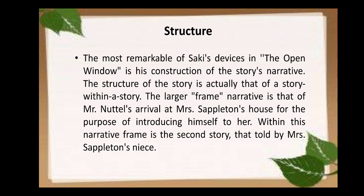When we talk of the structure of the story, the most remarkable of Saki's devices in The Open Window is his construction of the story's narrative. The structure is actually that of a story within a story. The larger frame narrative is that of Mr. Nuttall's arrival at Mrs. Sappleton's house to introduce himself, and within this frame is a second story told by Vera, who is Sappleton's niece. This device is very interesting and intriguing, as the girl narrates a story within the story — one that is supernatural and trapping.